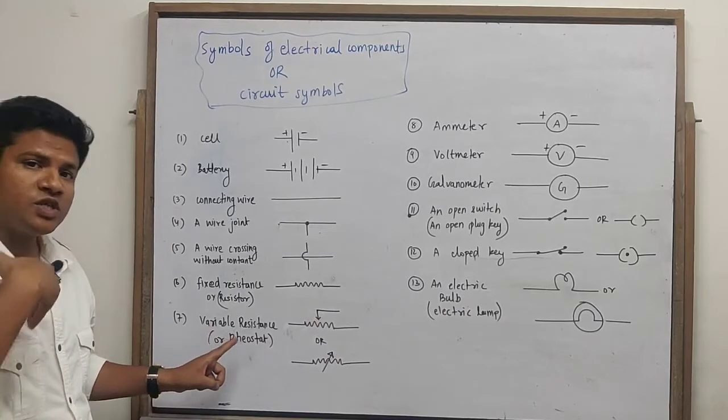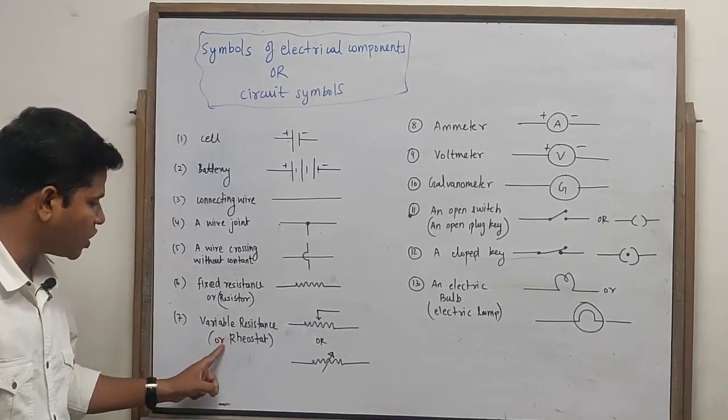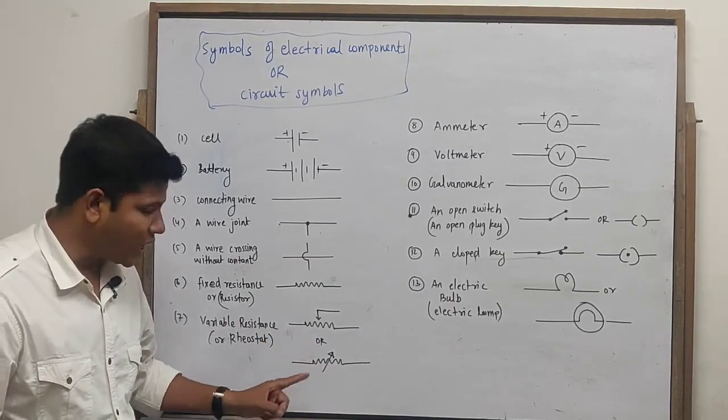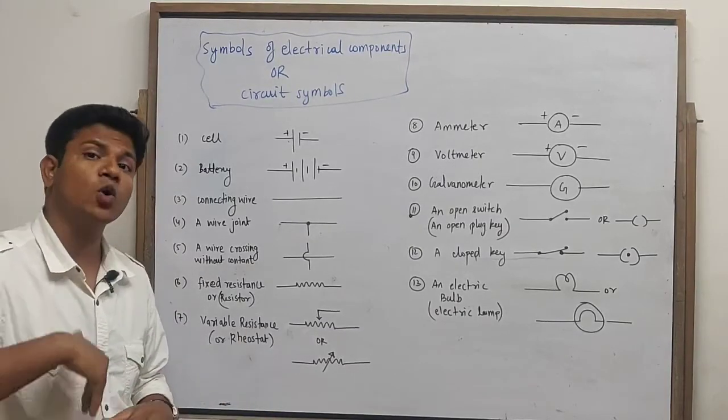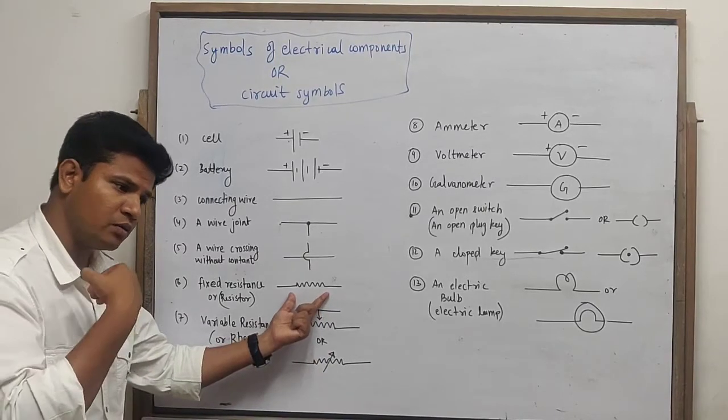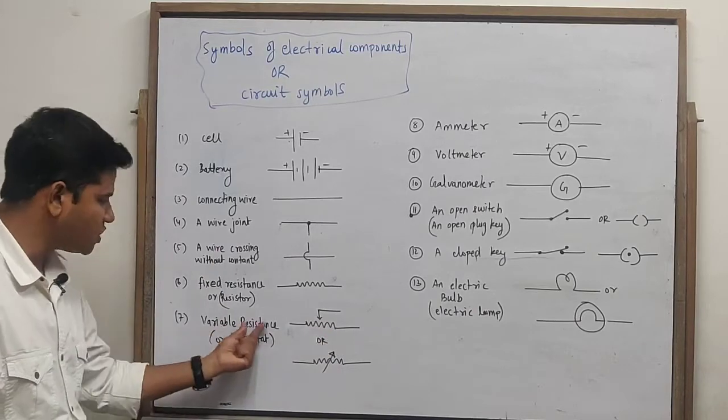If we change the resistance with time, then we use a rheostat. If we change the resistance time to time, then we can change the resistance and control the current. This is fixed. If we have a circuit, then we can vary. This is the name of the variable resistance.